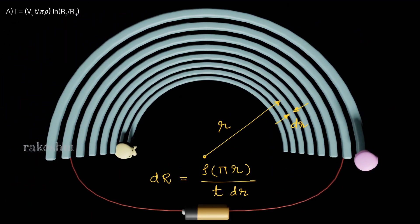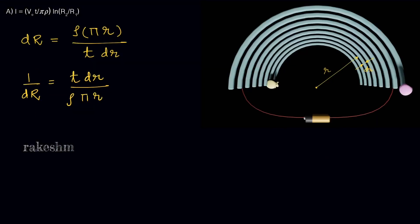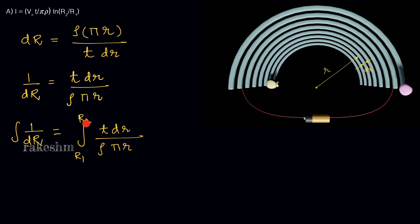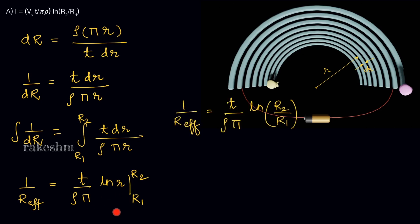Since all pieces are in parallel, the integral of 1/dR gives us 1/R_effective. So 1/dR equals t·dr divided by rho·pi·r. Integrating from R1 to R2, with t/(rho·pi) as a constant outside, and integrating dr/r gives ln(r).